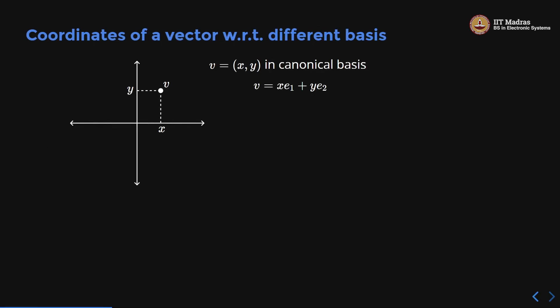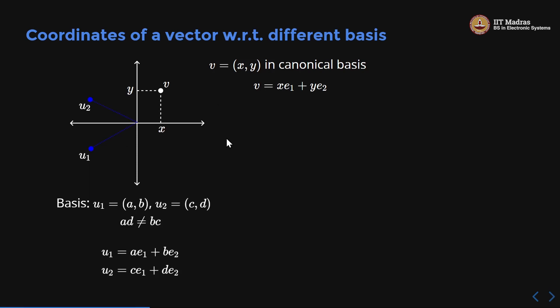First, let us talk about coordinates of a vector with respect to different bases — we have seen this before, I just want to recap. Let us say you have a vector v which is (x, y) in the canonical basis. So we write v = x·e1 + y·e2 and we denote this on the plot as a vector v with x coordinate x and y coordinate y. Now suppose I have another basis u1, u2, where u1 = (a, b) and u2 = (c, d), and ad ≠ bc, so these two are linearly independent.